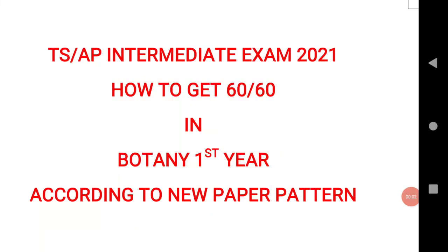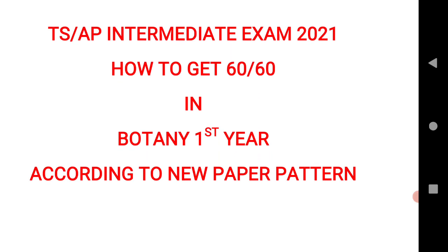Welcome to ST Academy. Today we are going to discuss about TSAP Intermediate Exam 2021 — how to get 60 out of 60 in Botany inter first year, with blueprint and chapter-wise weightage according to the new paper pattern. In this video we will see all the blueprint of Botany first year with chapter-wise weightage.